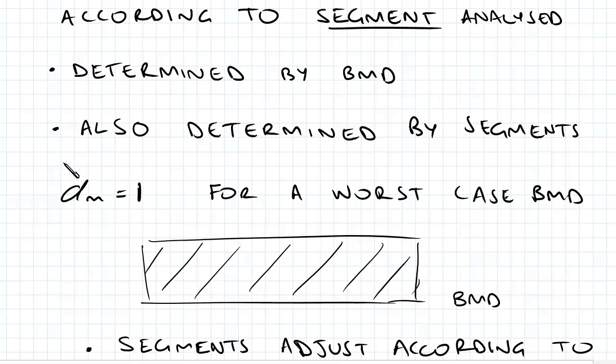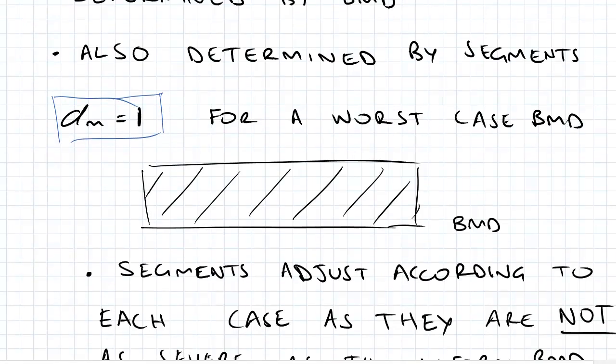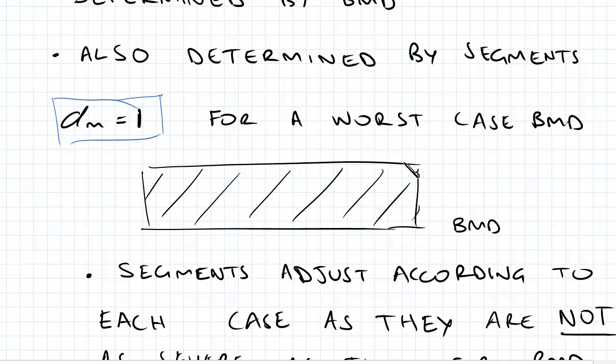One of the things I want to go over is alpha m equaling one. It's very important to understand that's for a worst case BMD. So as we can see here, I've got an alpha m equals to one. This is sort of the worst case BMD situation. We've got a uniform value and it's along the entire length of the beam.